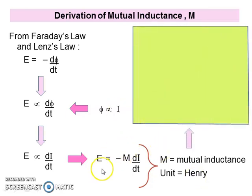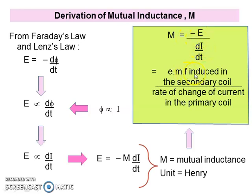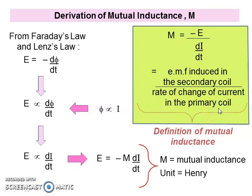If we arrange the equation with M as the subject, we get M equals negative E divided by di/dt. Here, E is the EMF induced in the secondary coil and di/dt is the rate of change of current in the primary coil. So mutual inductance is the ratio of EMF induced in the secondary coil to the rate of change of current in the primary coil.